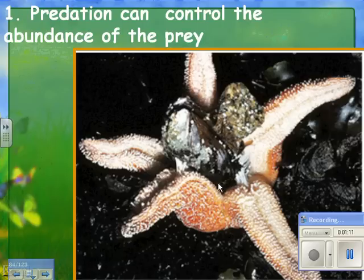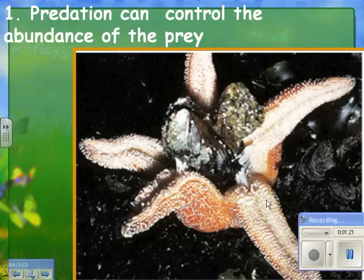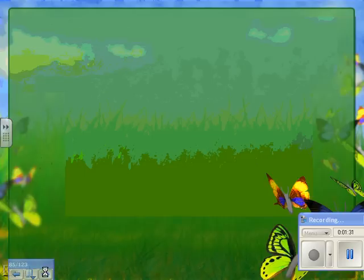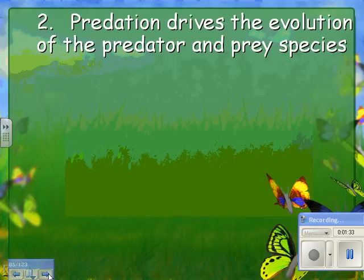Predation can control the abundance of prey. For example, a starfish eating a mussel — this is important in a community. If there were no predators, all the mussels would take over, but since there is a predator that feeds more on mussels than on other shellfish, there may be more species diversity.